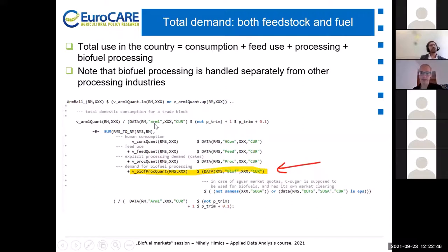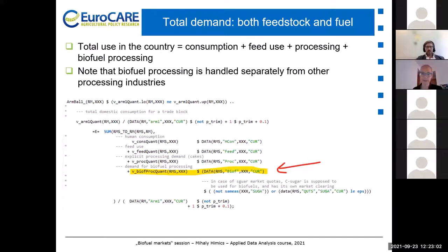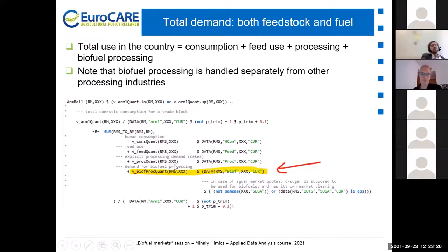The total demand structure uses what we call an Armington balance. The total use in the country is the sum of consumption — human consumption, which in biofuel cases should be zero — feed use, which is also zero, and then processing and biofuel processing separated. We have a different structure for the biofuel industry than for, say, the oil industry, which produces oils and cakes from oilseeds. Those have different functional forms, so we separate them into different variables: the processing quantity variable differs from what we use for bioethanol or biodiesel processing.